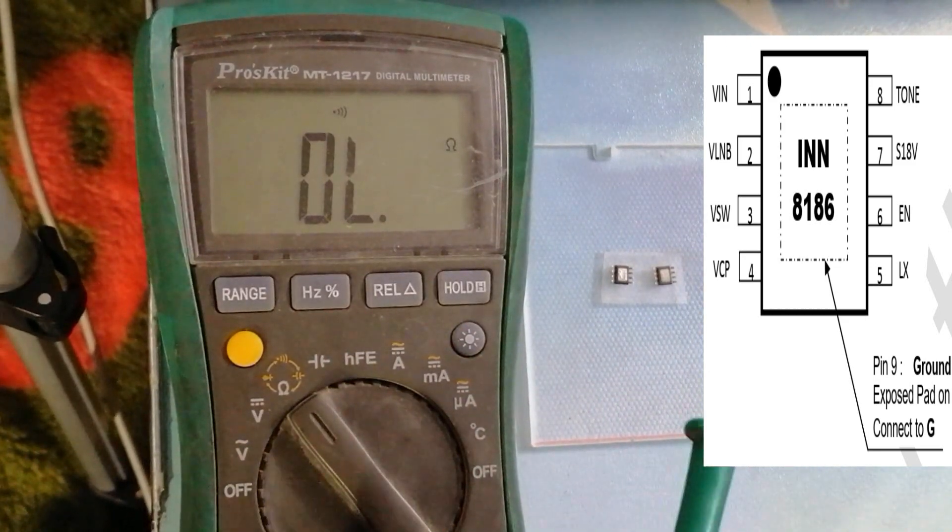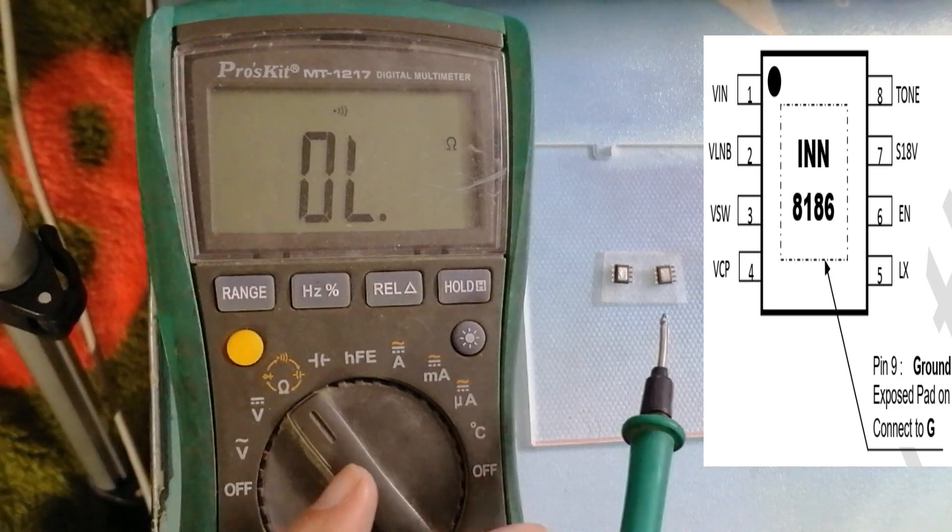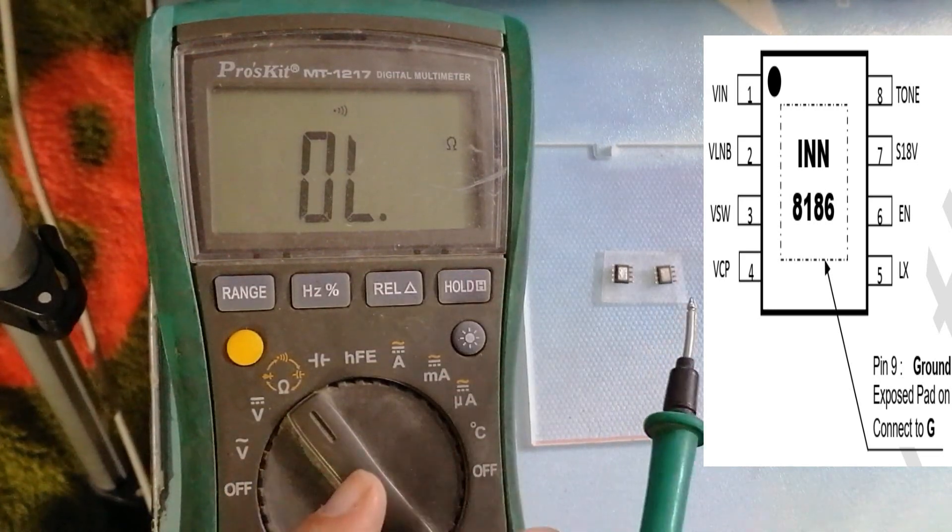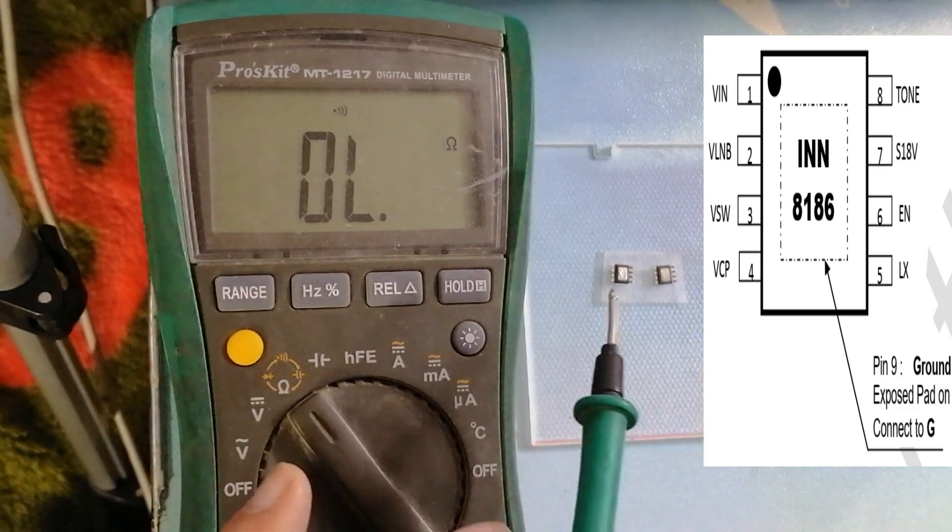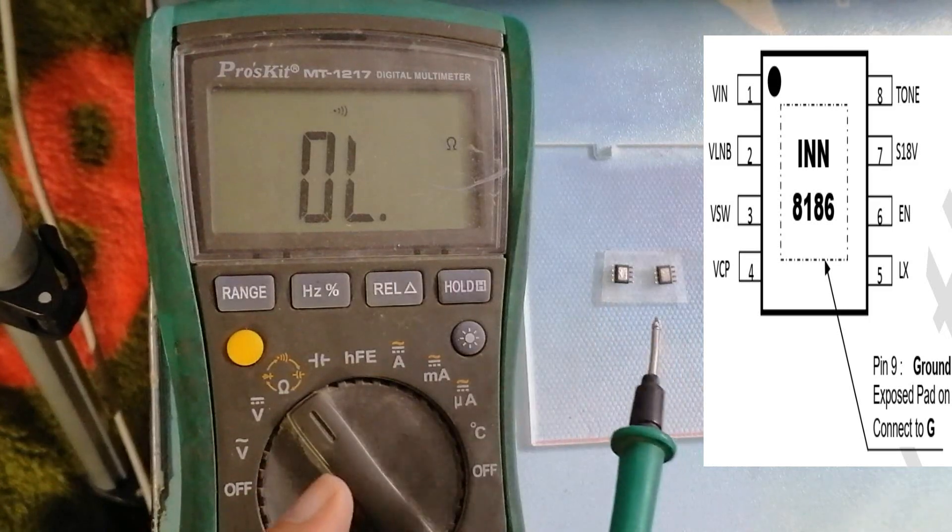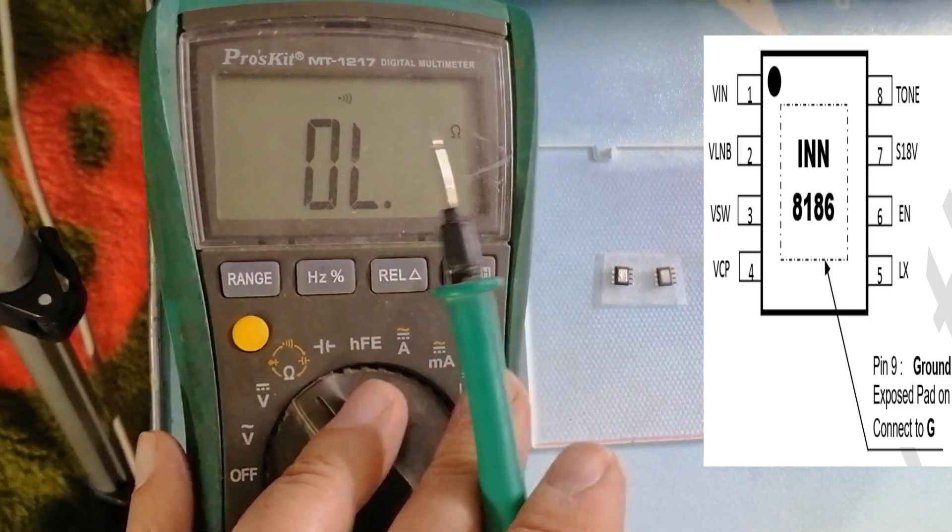It gives voltage for the antenna, LNB antenna, providing 14 volt and 18 volt. Now we want to test this IC.